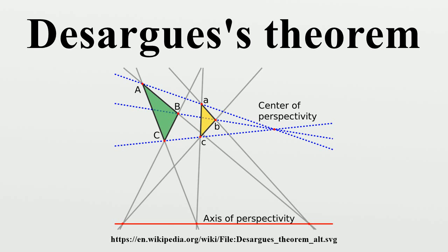Pappus's hexagon theorem states that if a hexagon ABCA'B'C' is drawn such that vertices A, B, and C lie on a line and vertices A', B', and C' lie on a second line, then each two opposite sides of the hexagon lie on two lines that meet in a point, and the three points constructed in this way are collinear. A plane in which Pappus's theorem is universally true is called Papian. Hirschberg showed that Desargues's theorem can be deduced from three applications of Pappus's theorem.